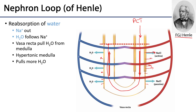There are specialized vessels called vasa recta, which are elaborations of the peritubular capillaries specifically for the nephron loop. As water leaves the tubule it is rapidly picked up by the vasa recta and returned to the cardiovascular system. This helps maintain the hyperosmolarity of the medulla so that water can continue to flow out from the nephron loop into the medulla and be picked up by the vasa recta. The filtrate then continues into the distal convoluted tubule.